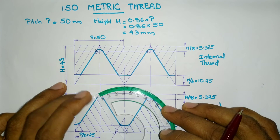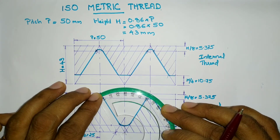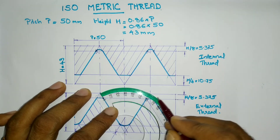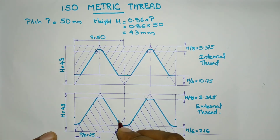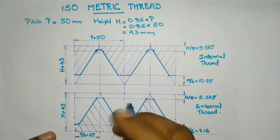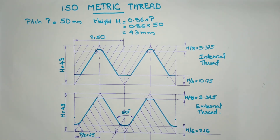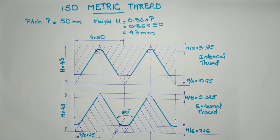The thread angle can be measured using a protractor and it will be 60 degrees for metric threads. This is how we can draw an internal and external metric thread. Thank you for watching the video.